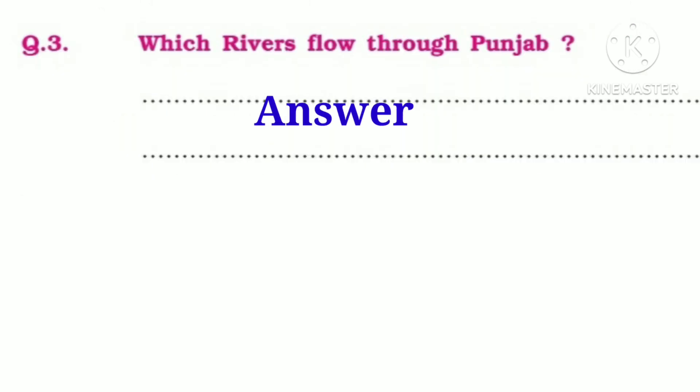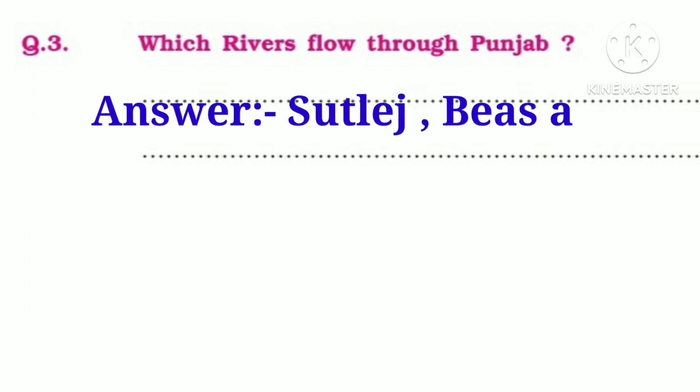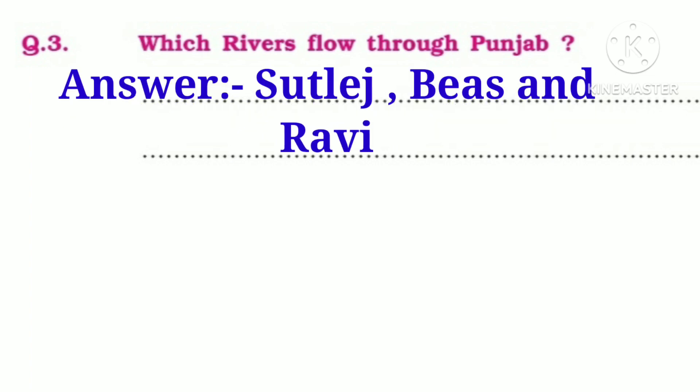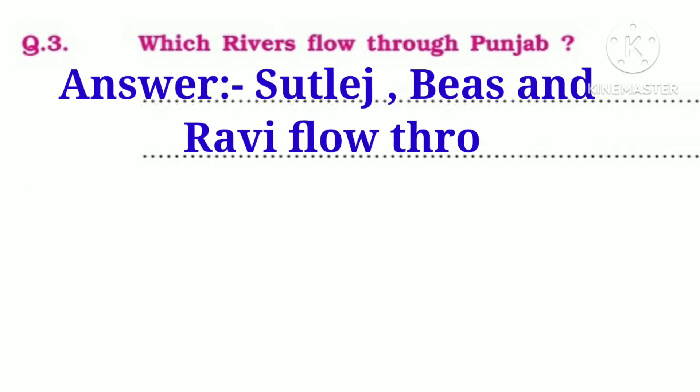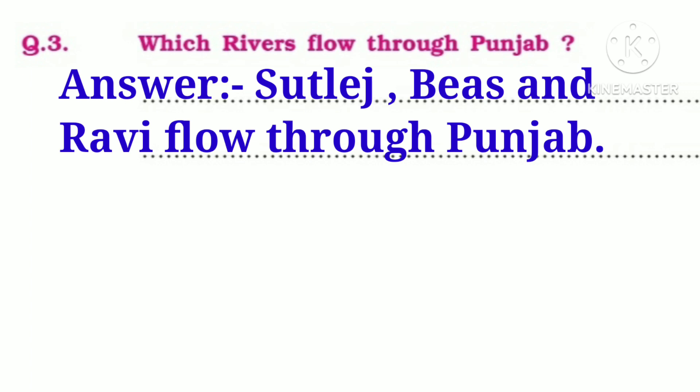Which rivers flow through Punjab? Answer: Satlaj, Biyaz and Ravi flow through Punjab.